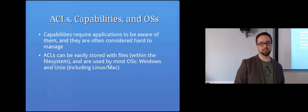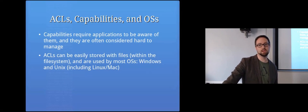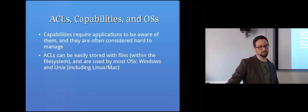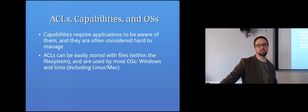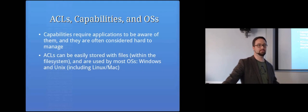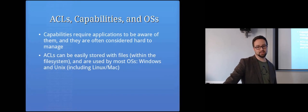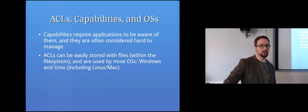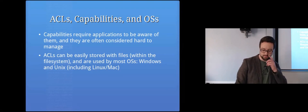Capabilities require applications to be aware of them and are considered hard to manage, though some in the security community argue the opposite. Access control lists are easy in general because they're stored with the files and within the file system — that's straightforward. Most operating systems use this approach. On Windows and Unix, including Linux and Mac, we use ACLs for discretionary access control, though there are other security features we'll discuss in coming weeks.